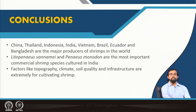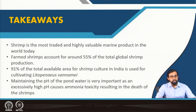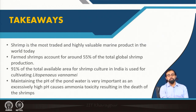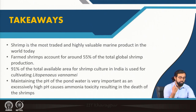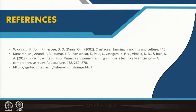In conclusion, we discussed the major shrimp-producing countries such as China, Thailand, Indonesia, and India; important commercial species such as Litopenaeus vannamei and Penaeus monodon; factors involved in site selection; and climatic and general considerations needed before pond construction. We also discussed pH, soil conditioning, and liming. We will continue with more details in the next lecture. Thank you — see you in the next lecture.